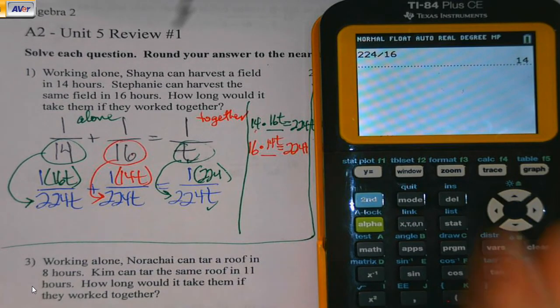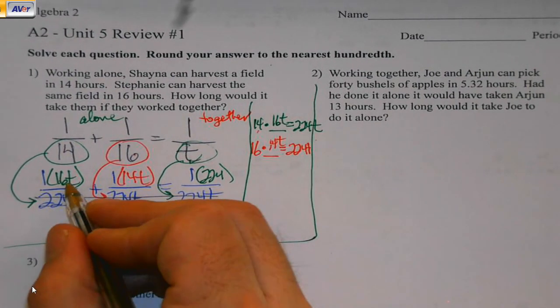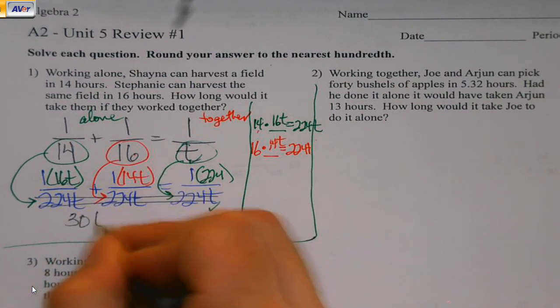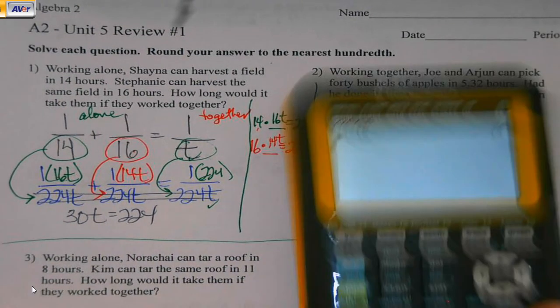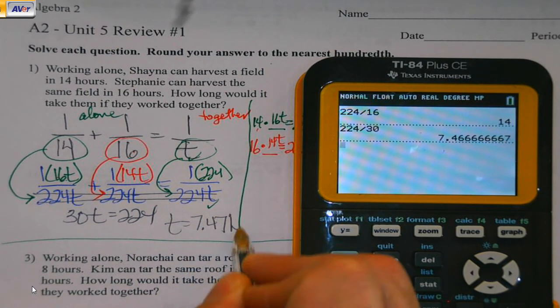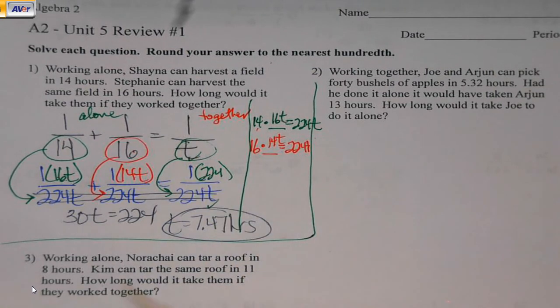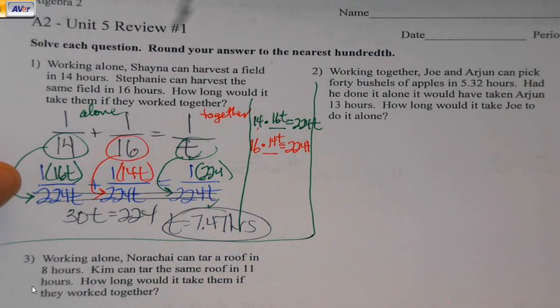The only time at this point you can dump the denominator is when there's an equals, when there's an equation of some sort. So here I've got 16T plus 14T would be 30T equals 224. And divide by 30, 7.47 hours. Normally I would do three, but here's what I notice. These are exactly the same. I'm not going to waste your time with that.